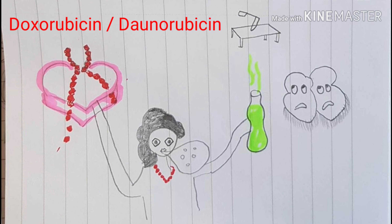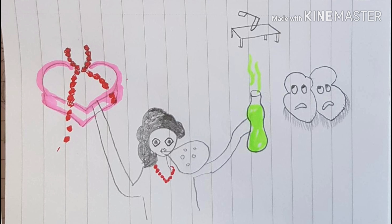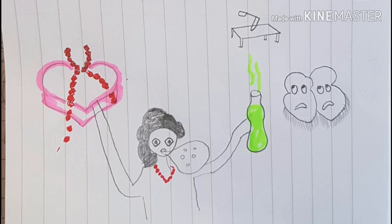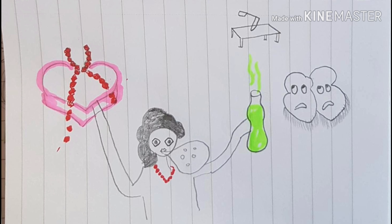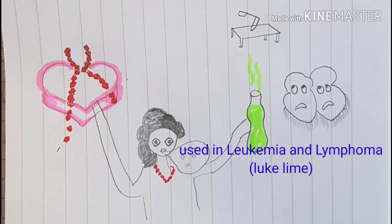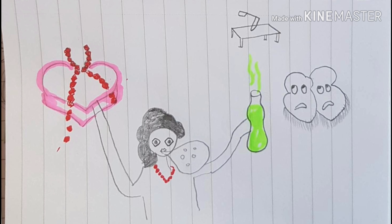The final drugs in this group are doxorubicin and daunorubicin. A red ruby diamond should remind you of the name — 'ruby' for doxorubicin and daunorubicin. The mechanism of action is intercalation into DNA, leading to DNA breakage — you can see the ruby shaped as double-stranded DNA with some rubies falling, representing intercalation. The drug also generates free radicals — a girl blowing bubble gum, with the bubbles reminding you of free radical formation. The drug is mainly used in leukemia and lymphoma, remembered by the 'lukewarm lime' she's holding.